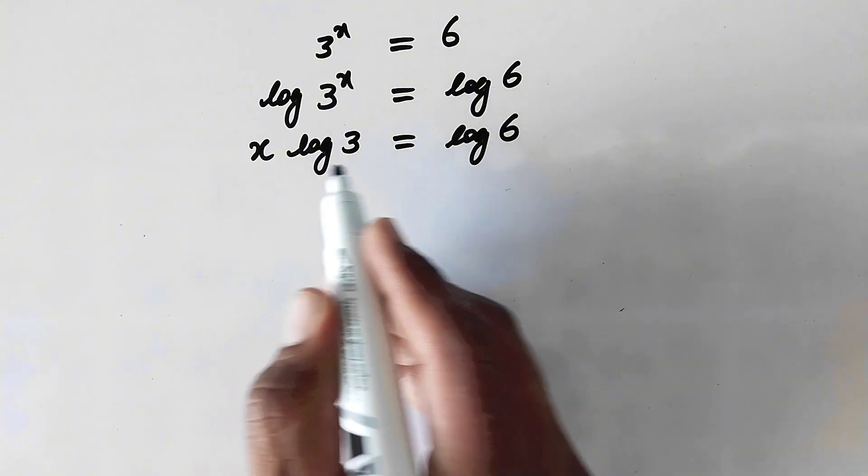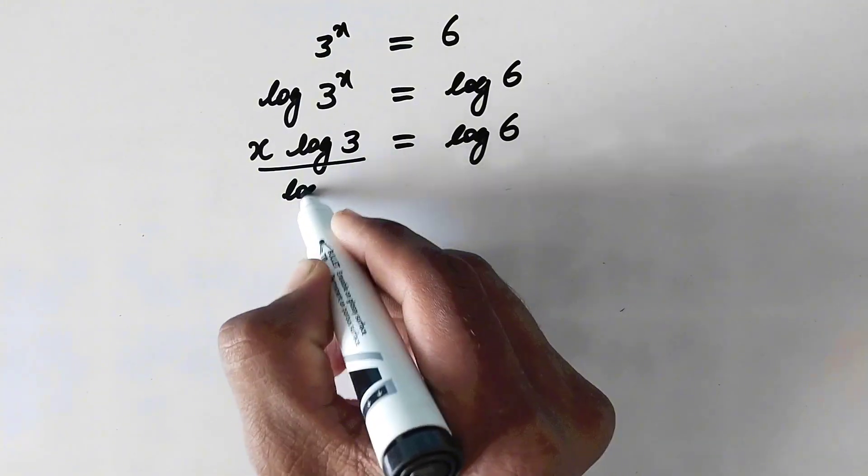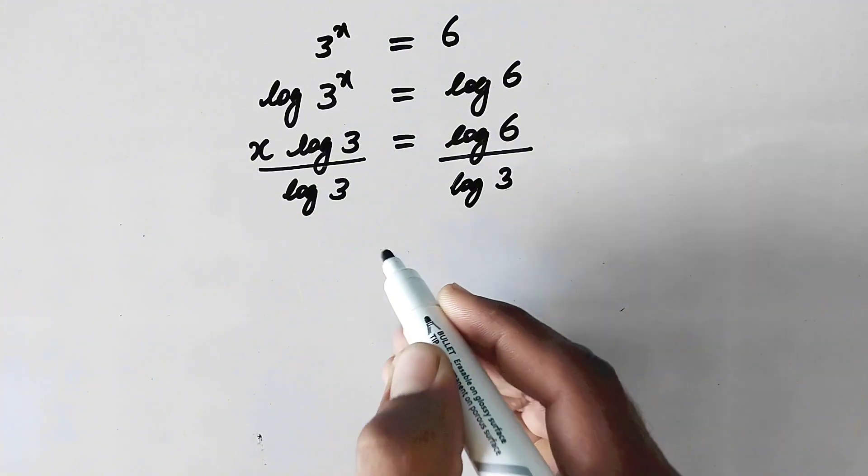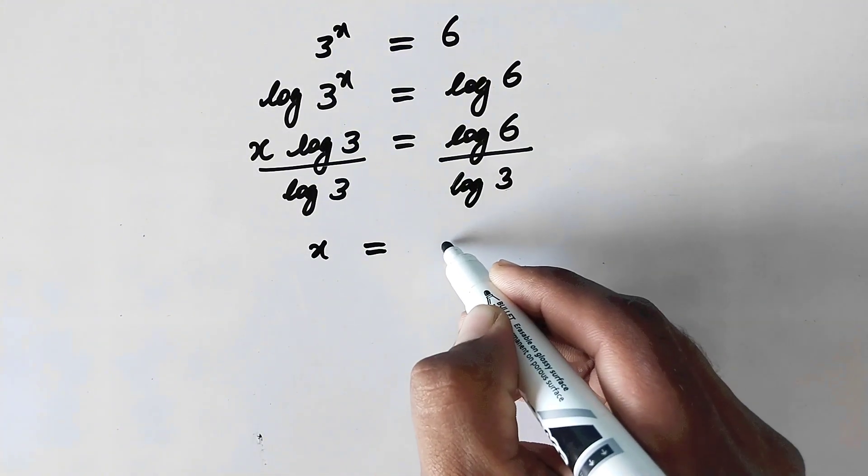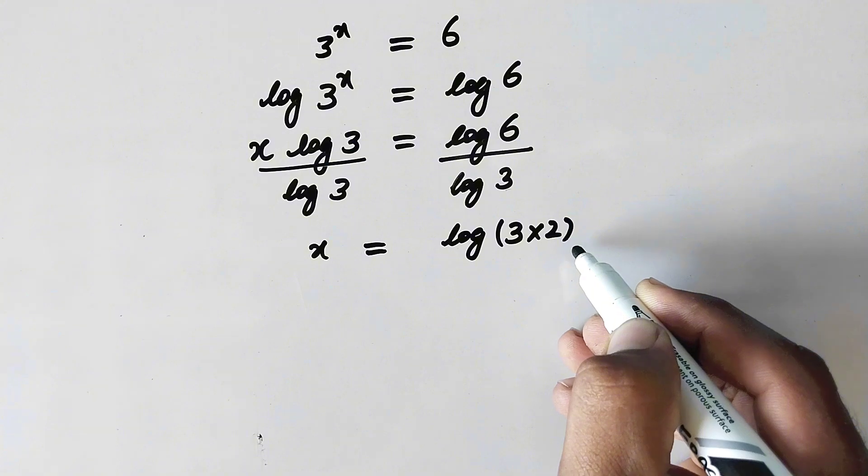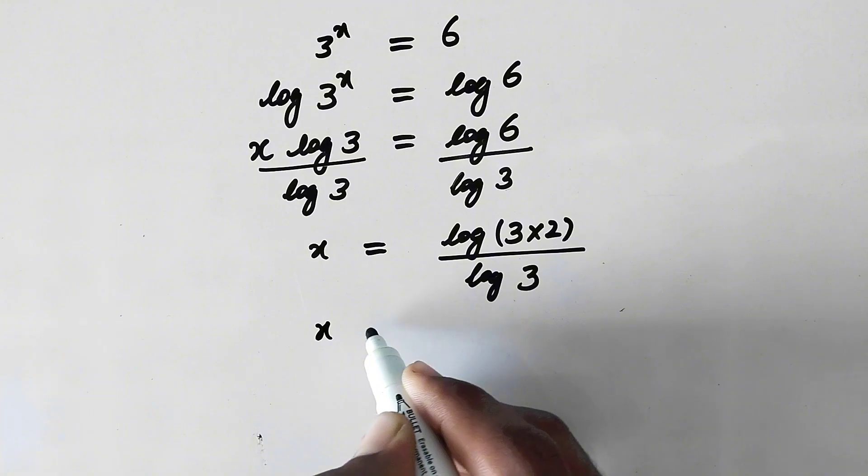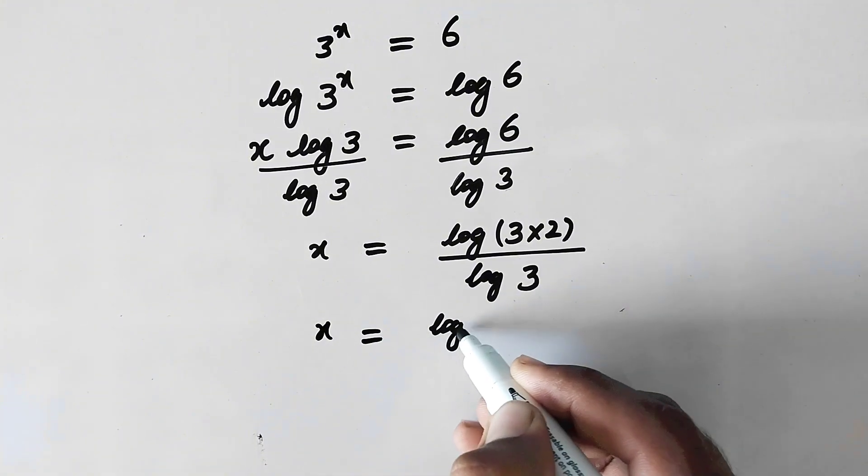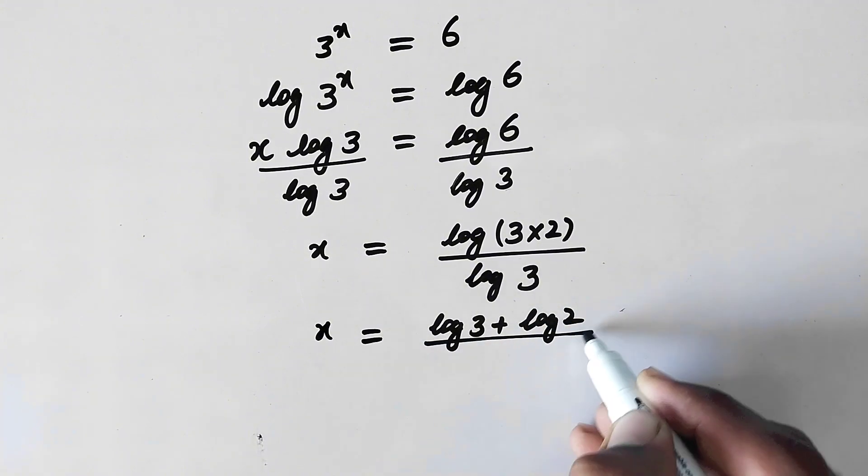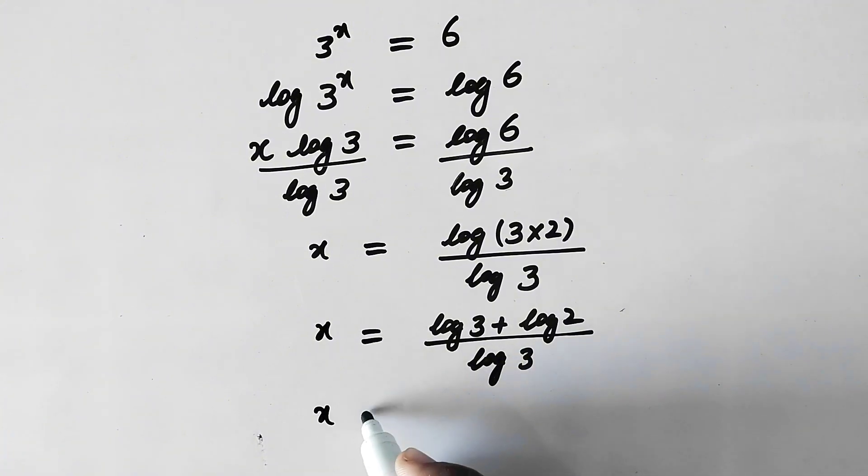Now since we have to find the value of x, we need to eliminate this log of 3. Therefore we will divide both sides by log of 3. So now x will be equal to log of 6, which can be written as log of 3 times 2, over log of 3.